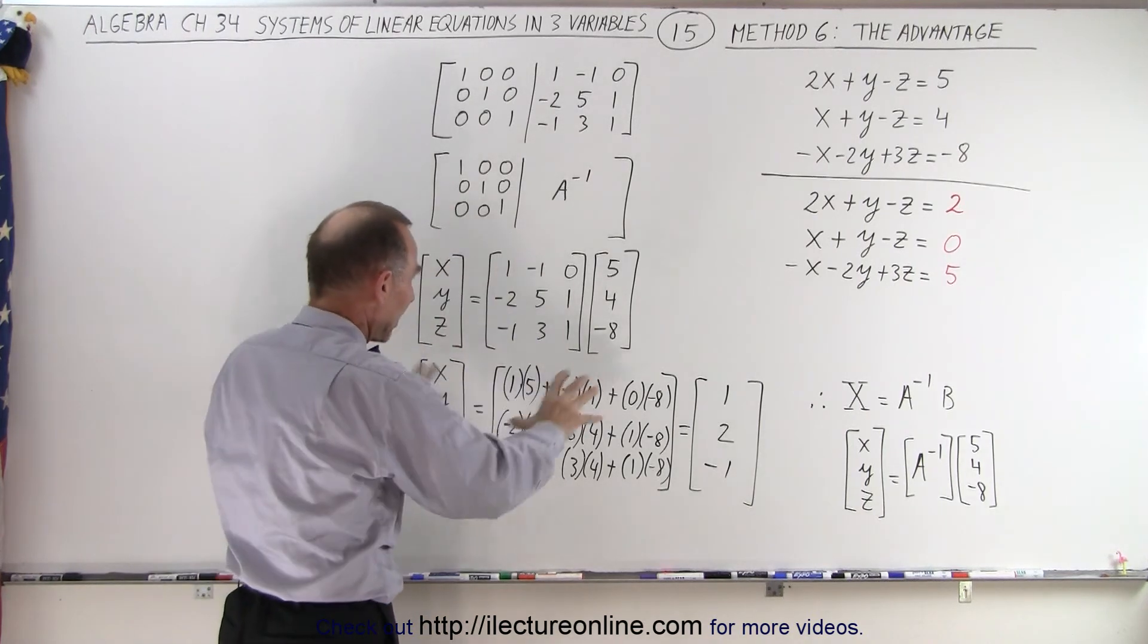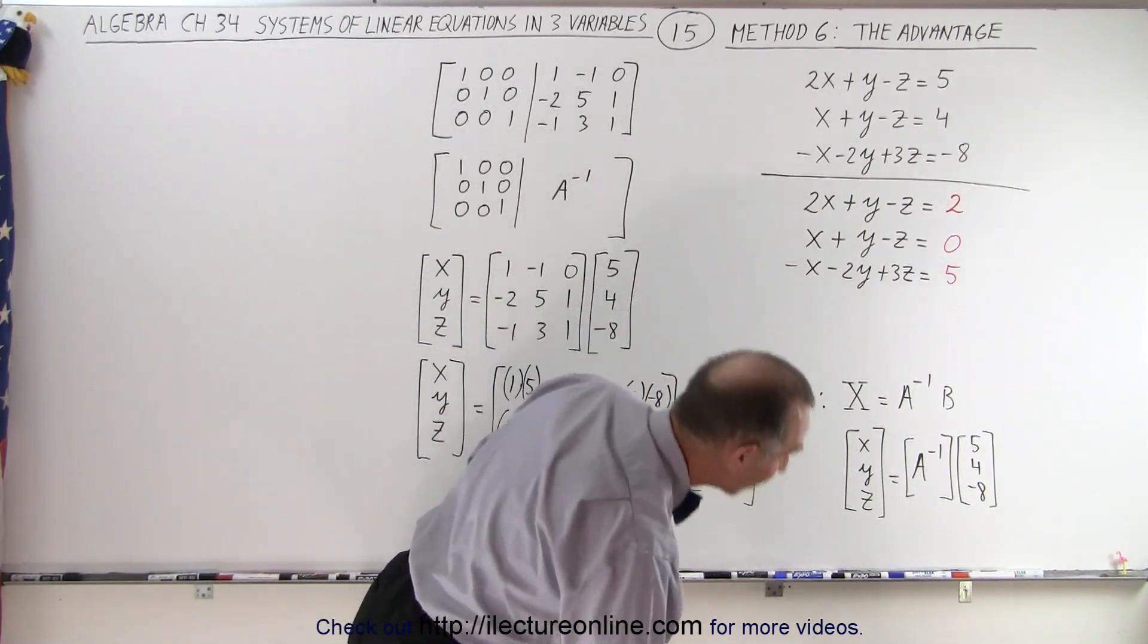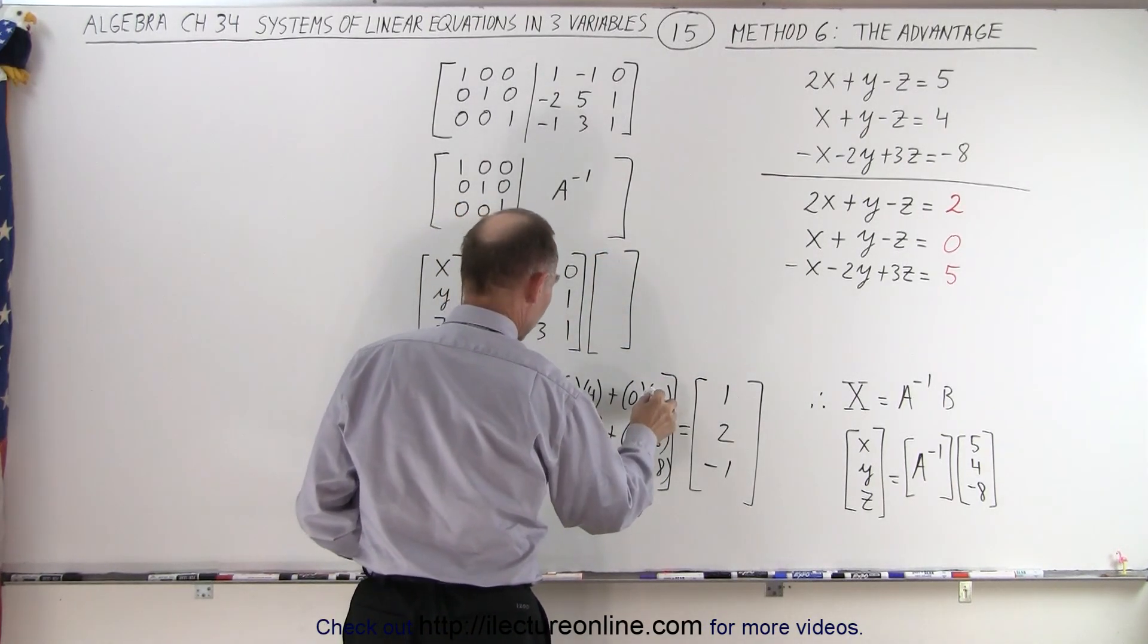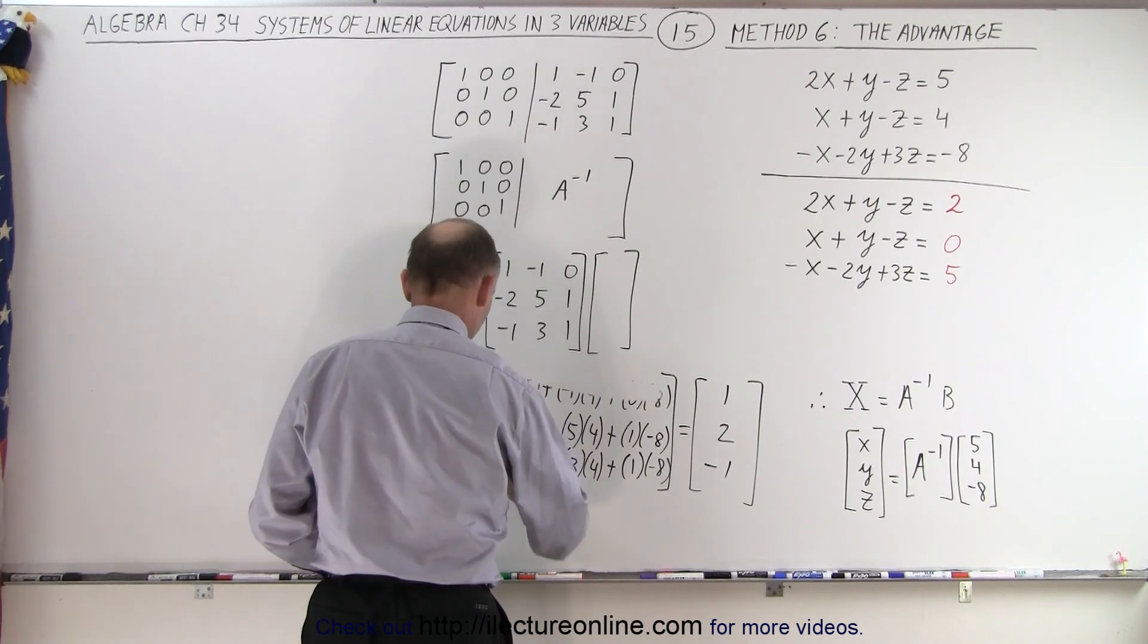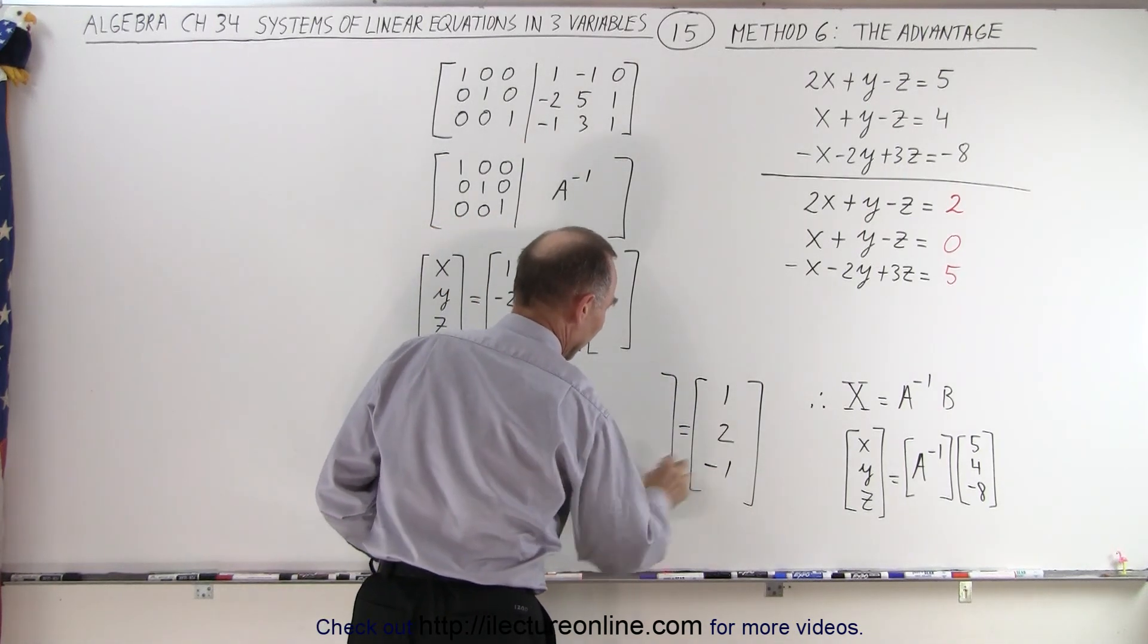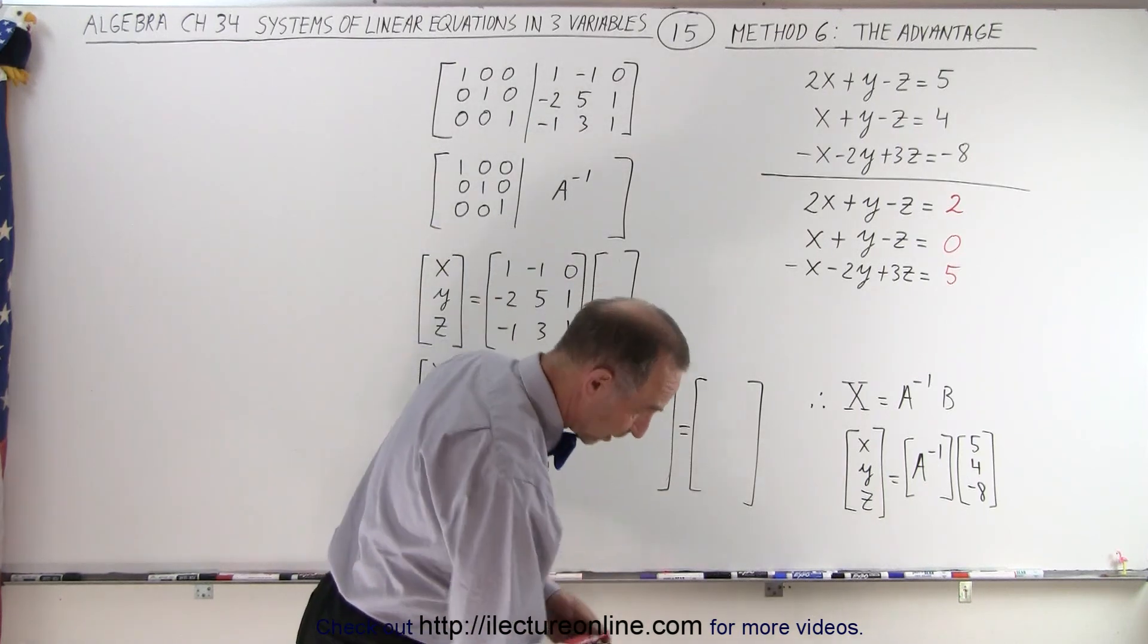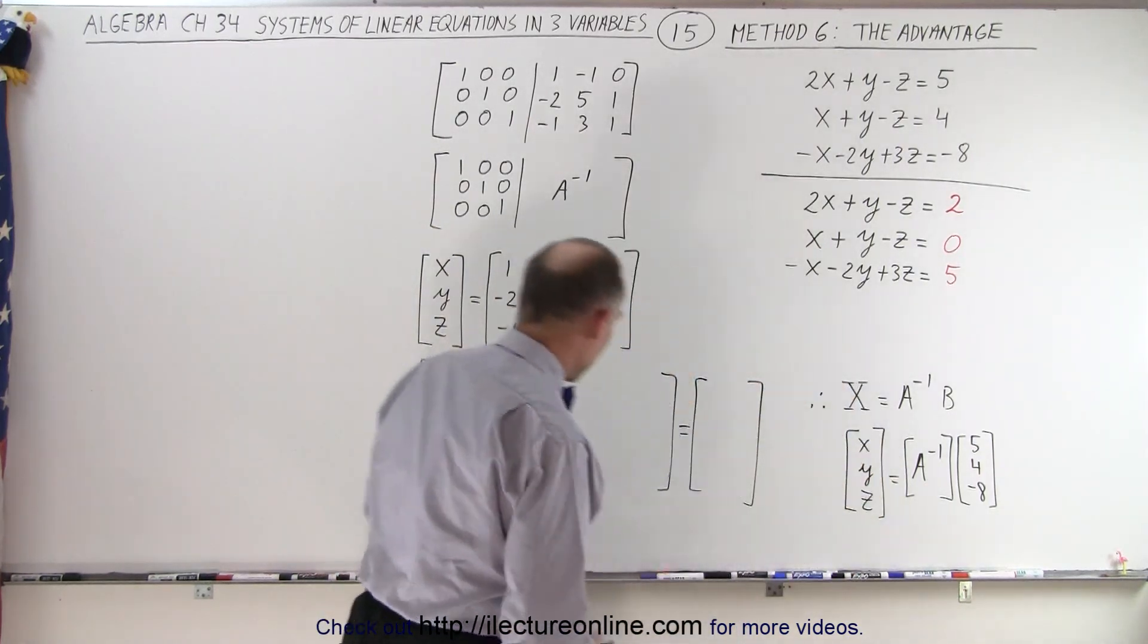So this is exactly what we had in the previous video. So what we need to do is simply change the B matrix, which means we're going to redo these calculations and end up with a new solution set for X, Y, and Z. So let's see how easy it would be to do that.